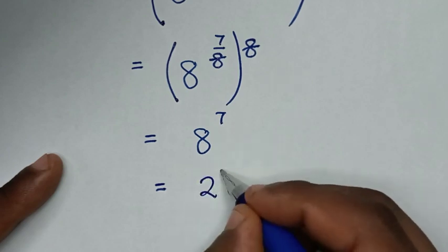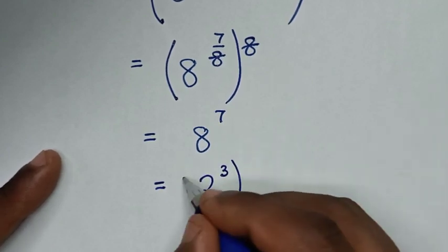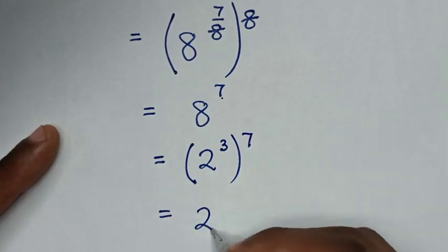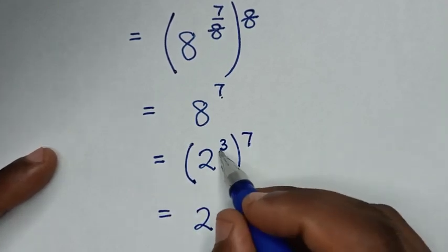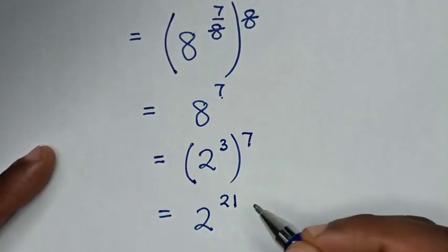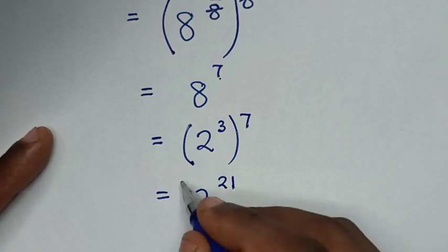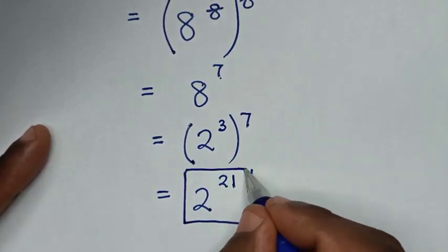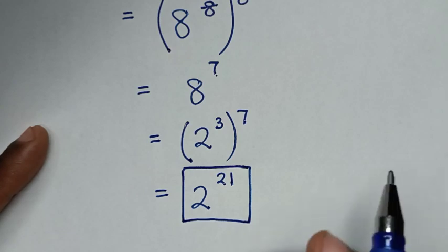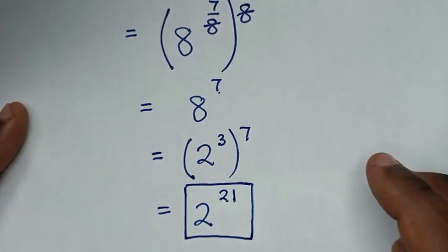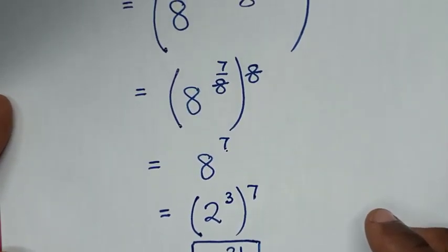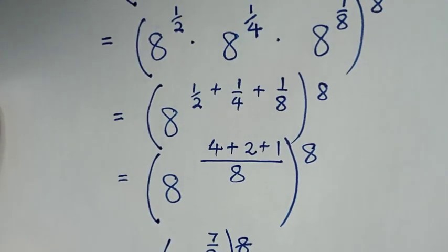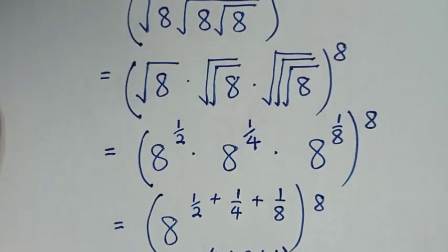In the next step, 8 is the same as 2 power of 3 in exponent form, bracket power of 7. So it will be equal to 2 power of 3 times 7, which is power of 21. Therefore 2 power of 21 is our final answer — the same as the answer in the first method. Thank you for watching, don't forget to subscribe to my channel, and see you in the next video, bye bye.